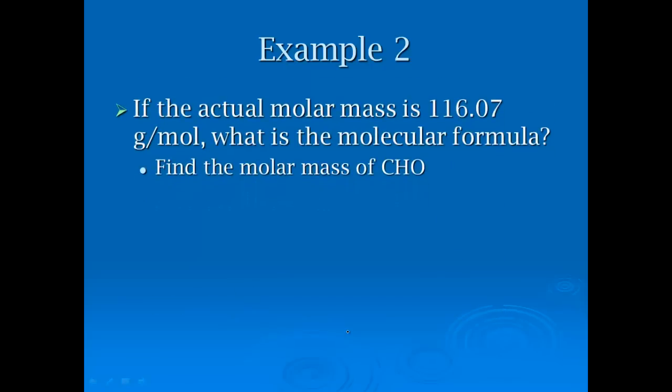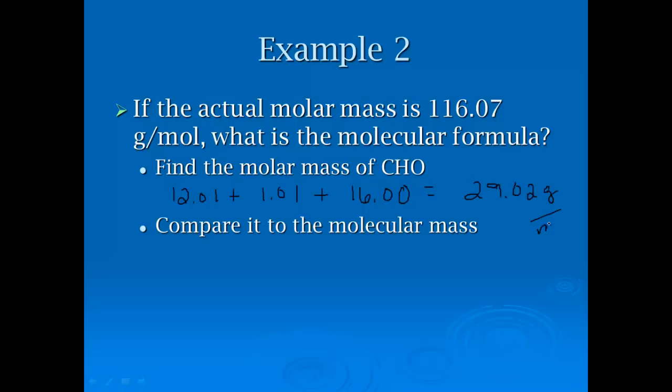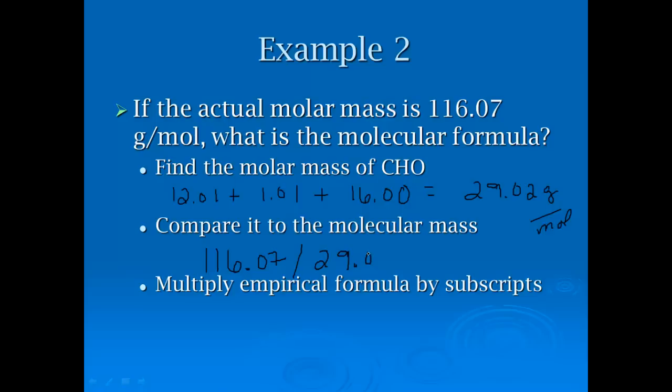If the actual molar mass is 116.07, what is the molecular formula? First step I've got to do is find the molar mass of CHO. I've got one carbon, which is 12.01. I've got one hydrogen, which is 1.01. One oxygen, which is 16.00, which gets me a molar mass of 29.02 grams per mole. Then I divide the big number by the small number. I'm going to take 116.07, divide it by 29.02, and get 4. We just have to multiply it out. If my empirical formula was CHO, I can multiply everything by 4: C4H4O4.